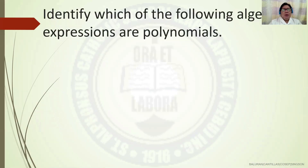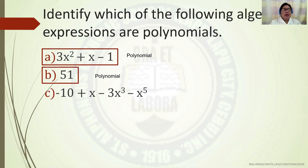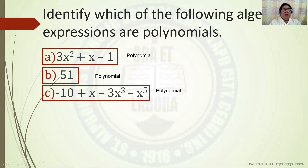Identify which of the following algebraic expressions are polynomials. Number 1: 3x squared plus x minus 1 — this algebraic expression is a polynomial. Letter B: 51 — 51 is a polynomial; it is a constant number. Letter C: negative 10 plus x minus 3x cubed minus x raised to exponent 5 — this is a polynomial because the exponents are positive.